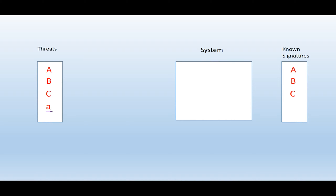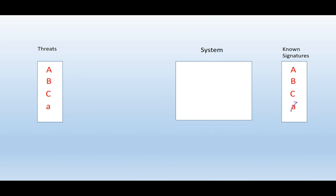Lowercase a still deletes files off your system, but when the attacker uses this threat, it will enter the system and be compared against previously known signatures. Lowercase a against uppercase A — they are different. Lowercase a against uppercase B — they are different. Lowercase a against uppercase C — they are different. So lowercase a will execute its code and delete files off your system. Again, the system will realize that this is bad and add it to its list of known signatures.